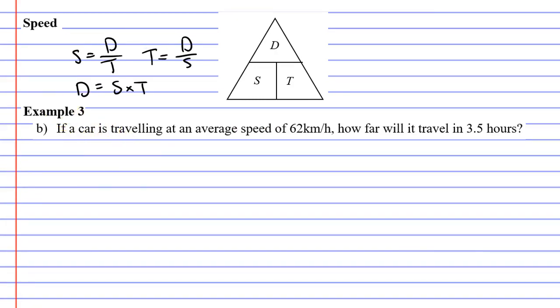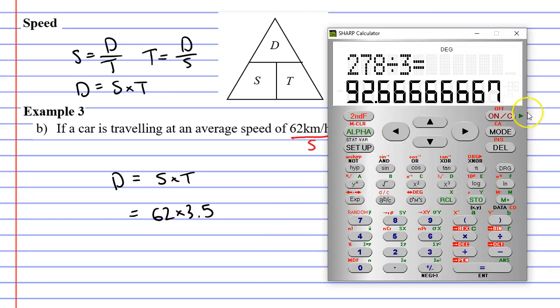Let's now move on to question B. This time it says, if a car is traveling at an average speed of 62 kilometers an hour, so that's S for speed, how far will it travel in 3.5 hours? So that's our time. We're trying to find distance. And distance equals speed times time. So using our formula, speed is 62 and time is 3.5,